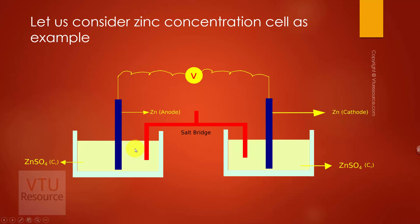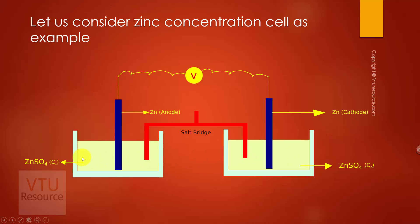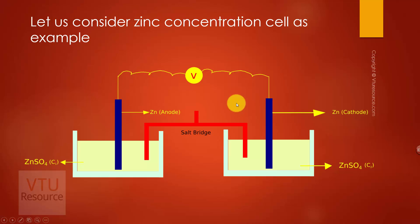Since the anode undergoes oxidation, we can observe flow of electrons from anode to cathode. The flow of electrons continues until the concentration C1 is equal to C2. Once the concentrations of both zinc sulphate solutions, C1 and C2, are equal, you can no more observe the flow of electrons from anode to cathode.